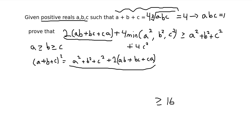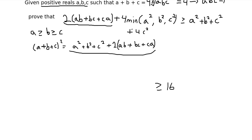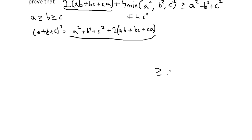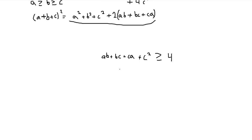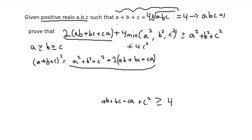Once we add this to both sides, we have ab plus bc plus ca times 4, and we also have 4c squared, so dividing by 4, the inequality we want to prove — which is much simpler — is that ab plus bc plus ca plus c squared is greater than or equal to 4.